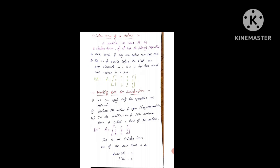Now let's go to the working rule for Echelon Form. How to proceed? First, we can apply only row operations. Second, reduce the matrix to an upper triangular matrix — upper triangular matrix is called Echelon Form. Third point: the number of non-zero rows is called the rank of the matrix.